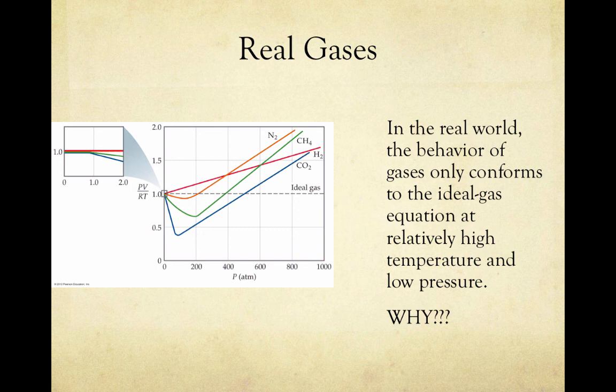It's also interesting to consider why certain gases deviate more than others. CO2 deviates the most, whereas H2 and N2 deviate quite a bit less. CO2 has stronger intermolecular forces than H2 or N2 due to having more electrons, so its dispersion forces are stronger. This causes CO2 to deviate more because it disobeys the assumption that particles do not attract each other.